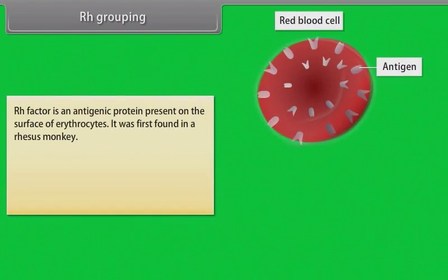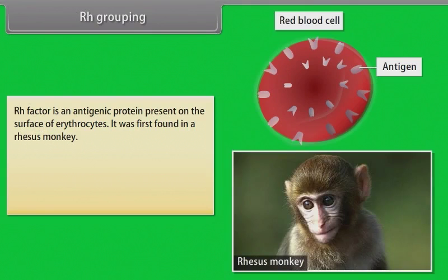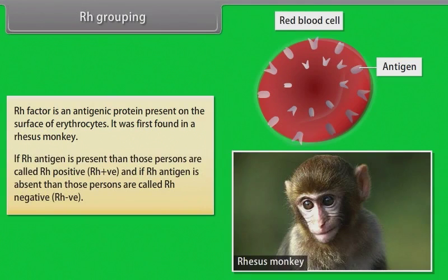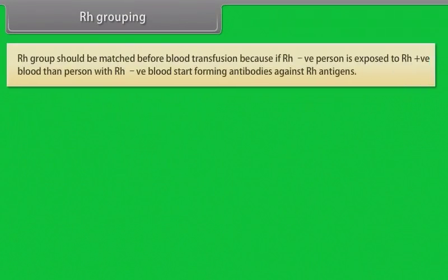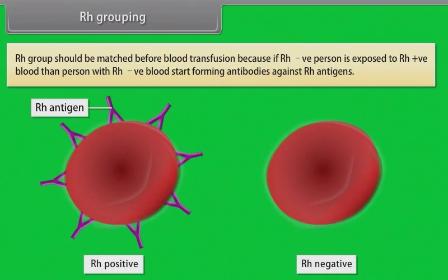RH factor is an antigenic protein present on the surface of erythrocytes, first found in a rhesus monkey. If RH antigen is present, those persons are called RH positive; if RH antigen is absent, they are called RH negative. RH group should be matched before blood transfusion, because if an RH negative person is exposed to RH positive blood, they start forming antibodies against RH antigens.